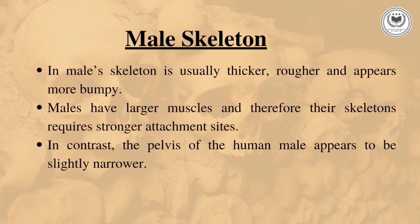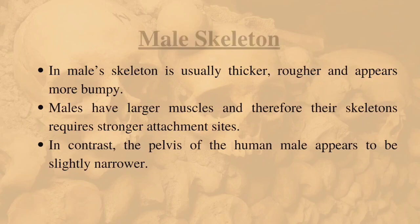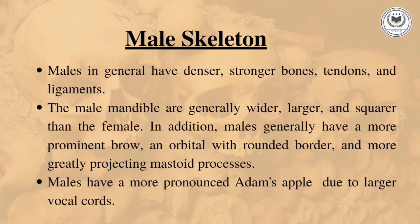Now we will study the male skeleton. The male skeleton is more bumpy, thicker, and rougher in texture compared to the female skeleton. As males have larger muscles, their skeleton bears more attachment sites, and the pelvic region of the male is quite narrow compared to the female. Males also have denser and stronger bones, ligaments, and tendons.